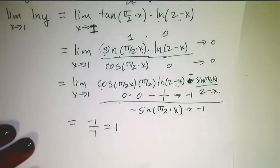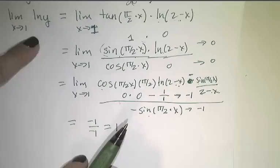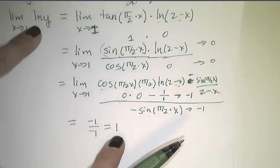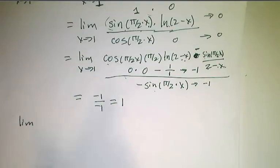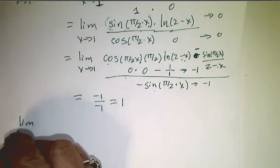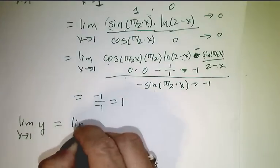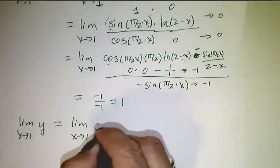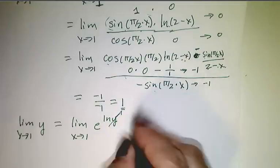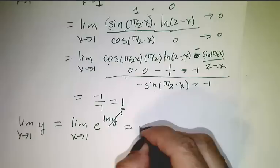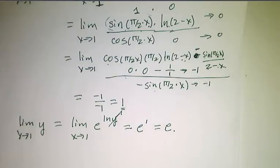I've discovered that the limit as x goes to 1 of the natural log of y goes to 1. My last step is to find what happens as x goes to 1 of y itself. We know that equals the limit as x goes to 1 of e to the ln of y, which we just discovered went to 1. So this thing goes to e to the 1, or just e. Now go practice.